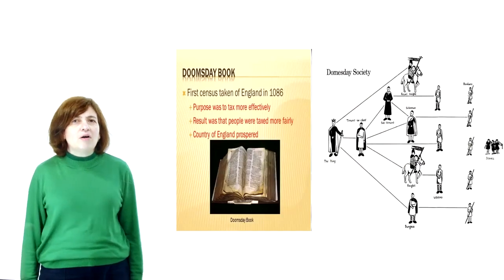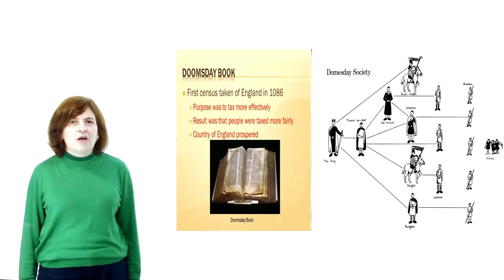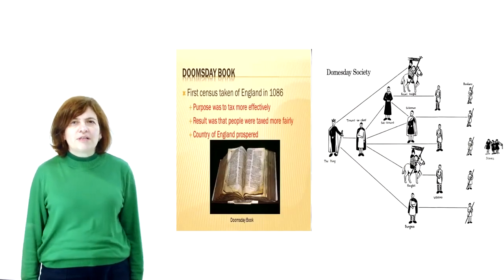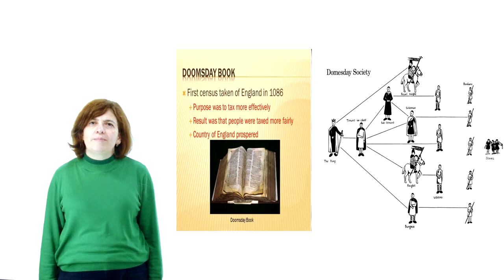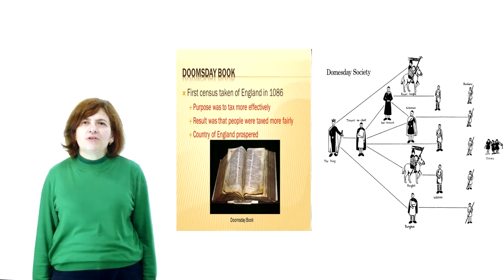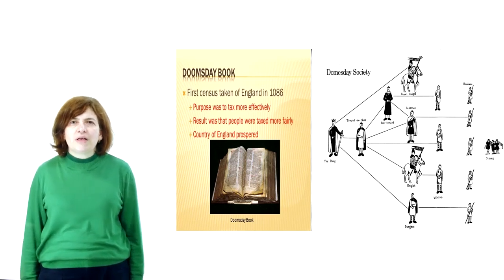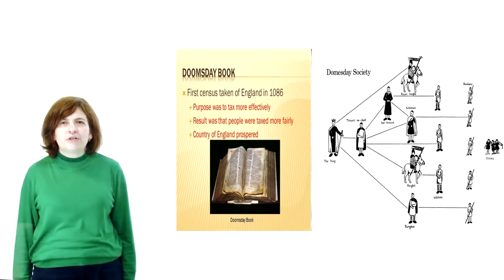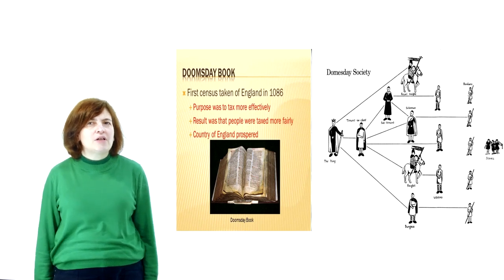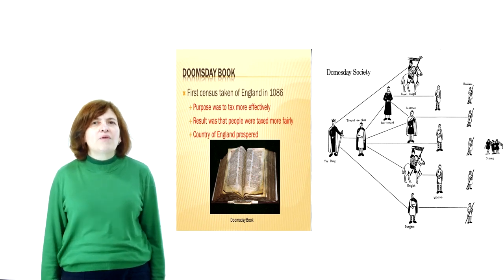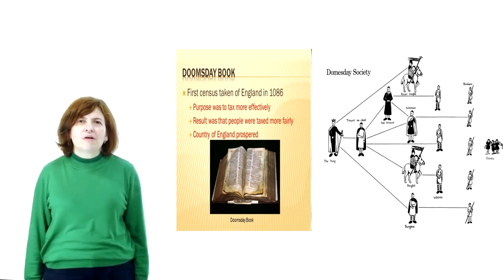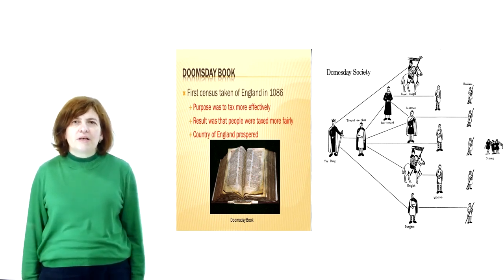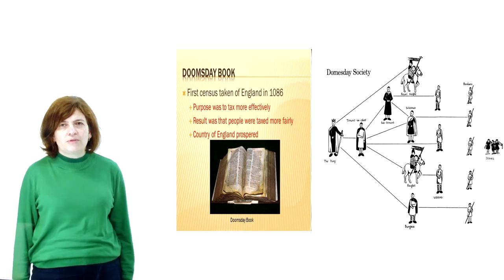The book occupies 400 double-sided pages and paints a picture of a country where virtually the entire population was engaged in agriculture, with little or no industry or commerce and few towns.